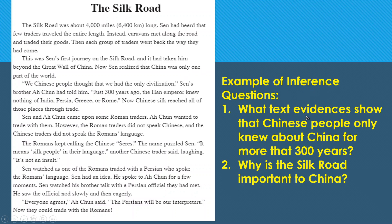Examples of inference questions: 'What text evidence shows that Chinese people only knew about China for more than 300 years?' You can find clues in the second and third paragraphs. 'Why is the Silk Road important to China?' — there's no single sentence answering this; ideas come from the first, third, fifth paragraphs, and more. That's what inference questions are — you gather ideas from different parts of the text.